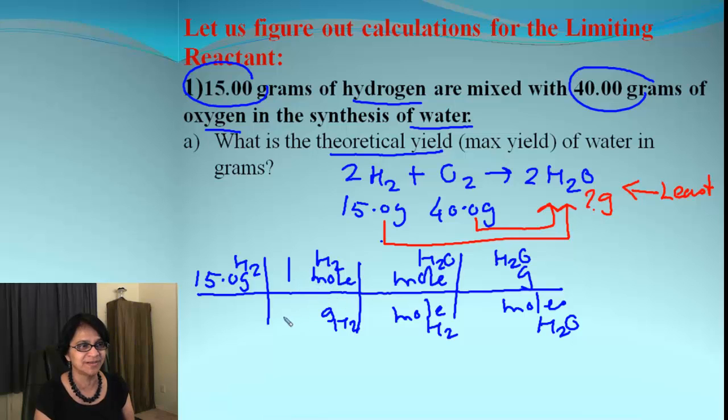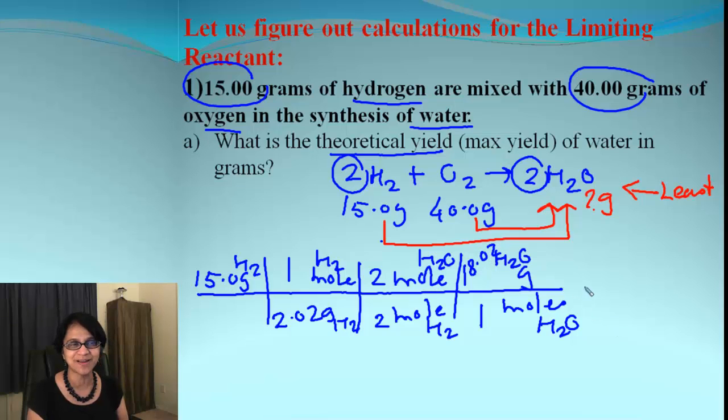Diagonally across, we are simply writing down the same values. When it's mole to gram, mole is number one and molar mass for hydrogen, remember it's diatomic, so it's 2.02. This is the mole ratio. How do we find mole ratio? Look at the coefficients. We have 2 and 2 as coefficients for both H2 and water. When it's moles to grams for water, it is 1 mole and 18.02 grams. When we solve all of this, the answer is simply 133.8 grams of water.